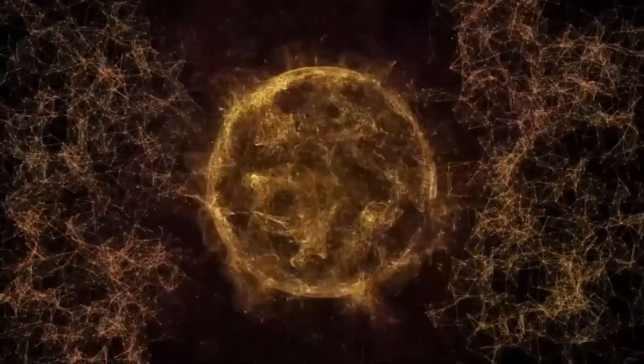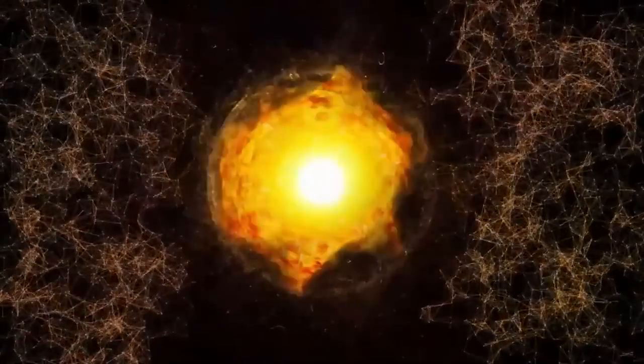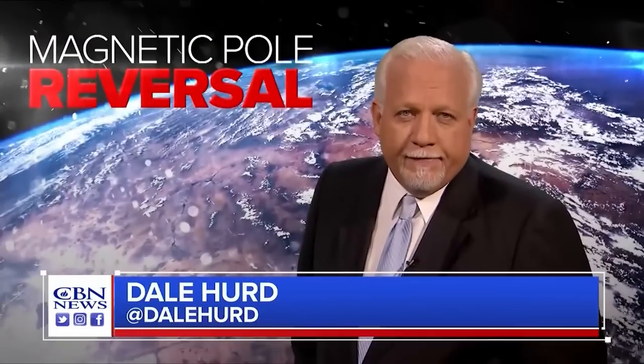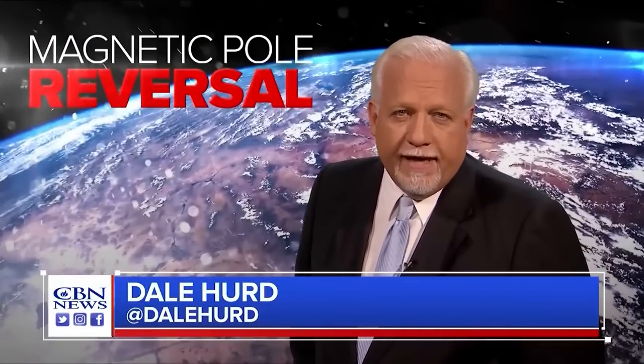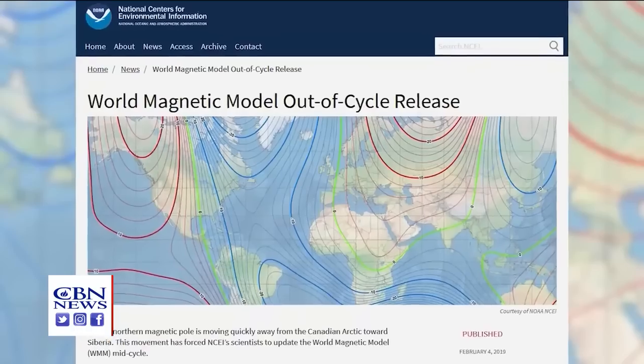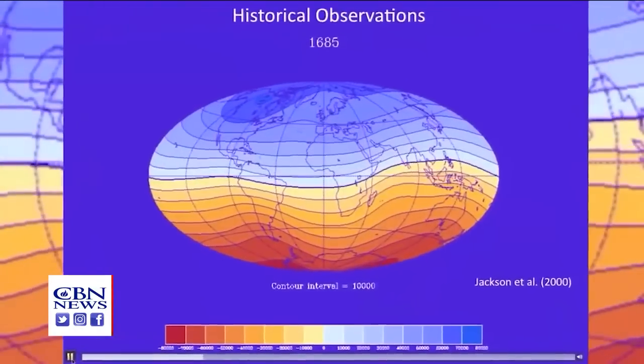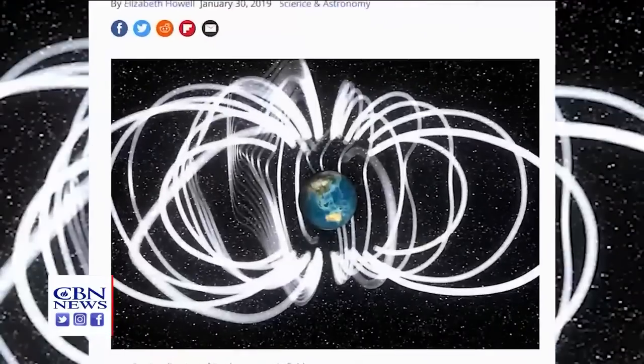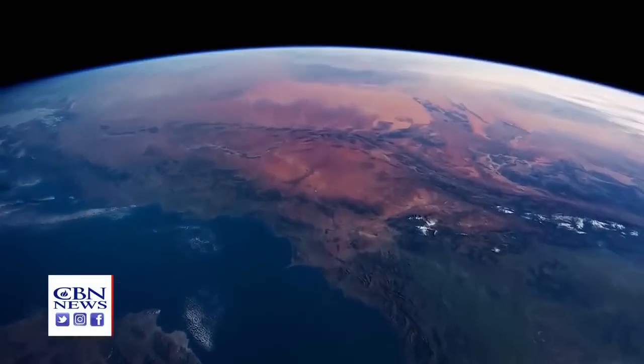By early 2018, there were problems with the world magnetic model. Researchers from NOAA and the British Geological Survey in Edinburgh were doing their annual check to see how well the model was capturing all the changes in the Earth's magnetic field. They realized that it was so wrong that it was getting close to the limit for acceptable navigational errors.